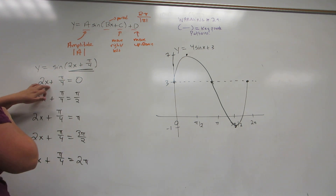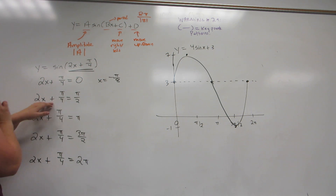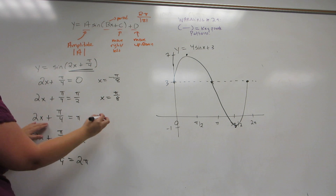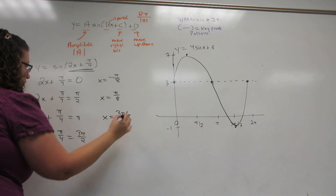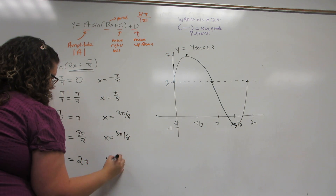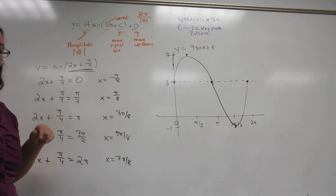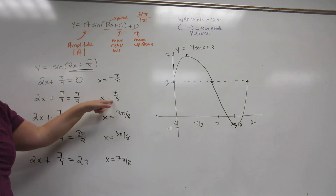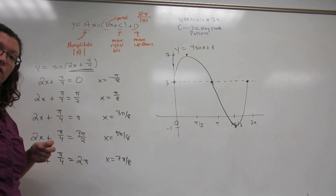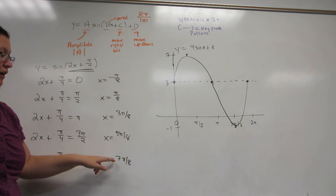For the first equation, I subtract pi over 4, then divide by 2, and get x equals negative pi over 8. For the second, I subtract pi over 4 and divide by 2, and get x equals pi over 8. For the third, I get 3 pi over 8. Similarly, I get 5 pi over 8 and 7 pi over 8. You may have noticed a pattern: ignoring the pi's and 8's, the numerators are negative 1, 1, 3, 5, 7 — each increasing by 2. So as long as you know the first two, you can keep adding that amount to get all the others.